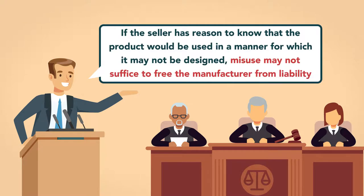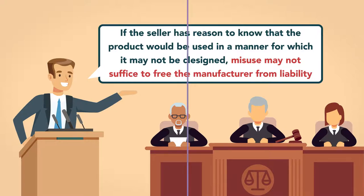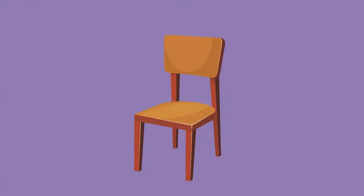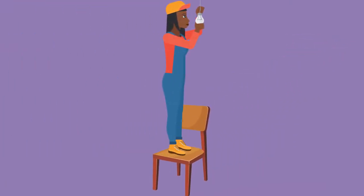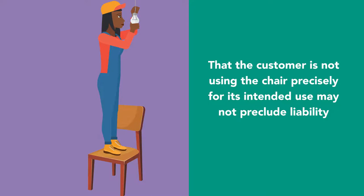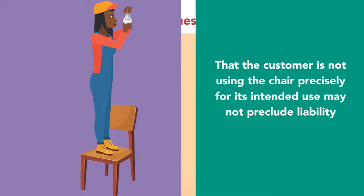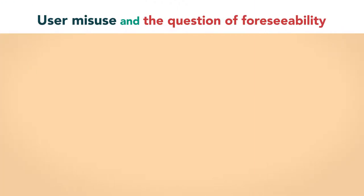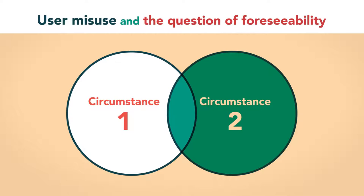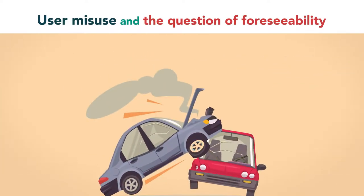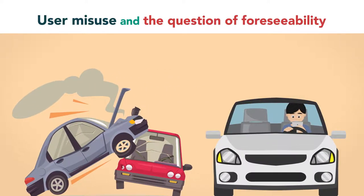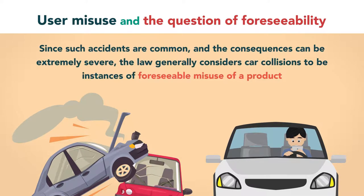If the seller has reason to know that the product would be used in a manner for which it may not be designed, misuse may not suffice to free the manufacturer from liability. For example, while solid wooden chairs may be made for sitting on and not standing on, it may certainly be foreseeable that customers would use the chairs to stand on to change light bulbs. That the customer is not using the chair precisely for its intended use may not preclude liability. Many product liability cases involve motor vehicle accidents. Such accidents are usually the result of driver error or maybe nobody's fault at all. Since such accidents are common and the consequences can be extremely severe, the law generally considers car collisions to be instances of foreseeable misuse of a product.